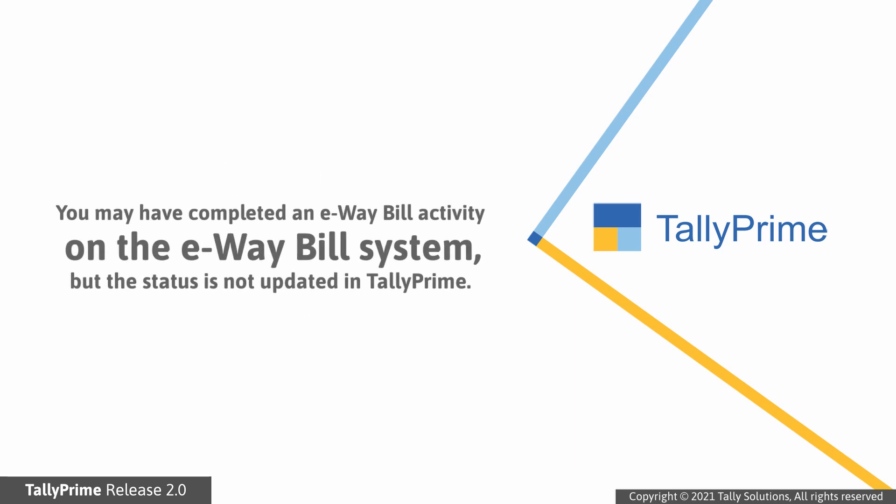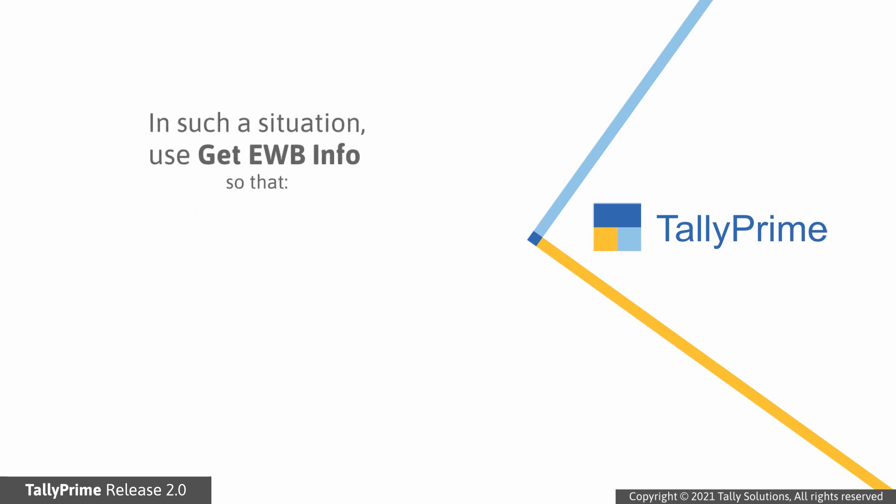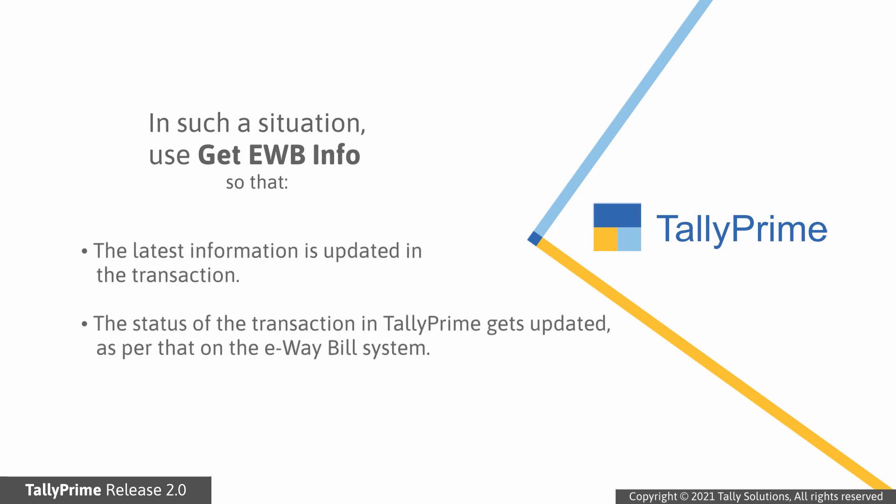Let's first see how to get e-way bill information for a transaction using the e-way bill report in TallyPrime. You may have completed an e-way bill activity such as generation or cancellation for a transaction on the e-way bill system or using any medium other than TallyPrime. However, the status of that transaction in TallyPrime is pending. In such a situation, you can use the Get e-way bill information option, and the latest information will get updated in the transaction in seconds.